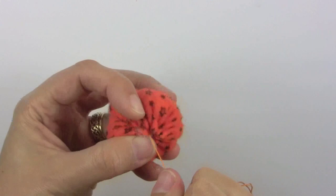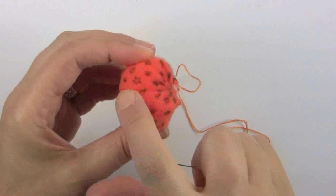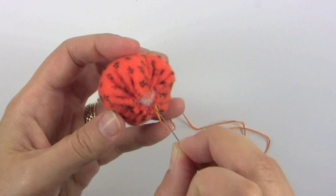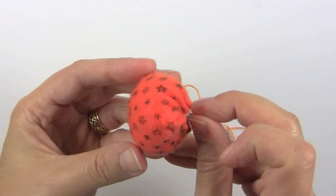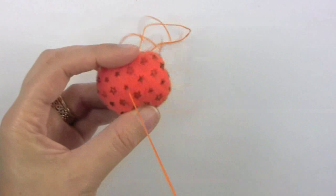To make the ridges along the sides of the pumpkin, you know how a pumpkin will have the ridges along the side, you just take your needle and poke it straight down through the middle until you get to the bottom like this. Then just pull it through.